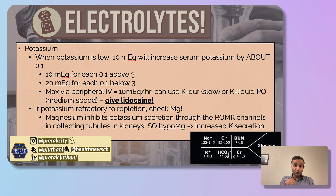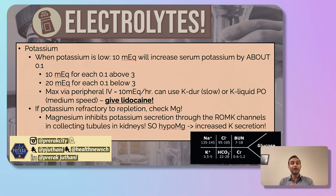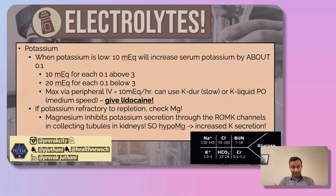When potassium is low, we replete it. I give 10 mEq of potassium for every point they're below 4. So if they're at 3.5, I give 50 mEq to get them up to 4 — every 10 mEq will usually increase potassium by 0.1. For every point below 3, I give 20 mEq. So if someone has a potassium of 2.9, I give 20 mEq to get from 2.9 to 3, then another 100 mEq — both oral and IV, split half and half — to get them up to 4.